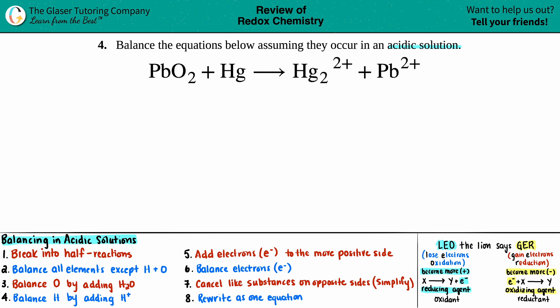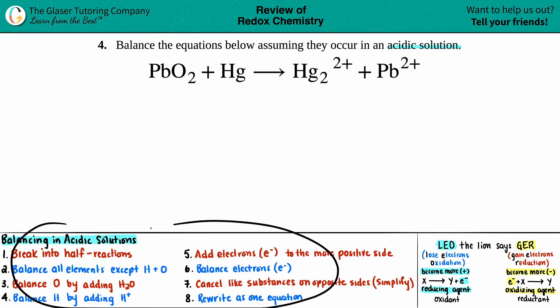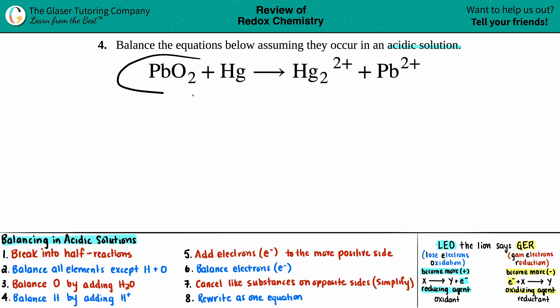They said to balance in an acidic solution. Whenever they say to balance in either an acidic or basic solution, there are steps — eight total steps. If you can get these eight steps down and they give you an acidic solution question on your test or quiz, it's always going to be these same eight steps in the same order, no matter what they throw at you.